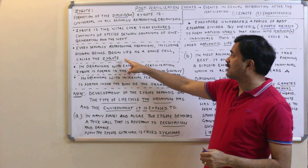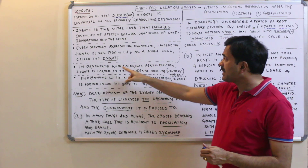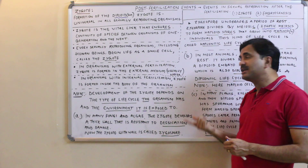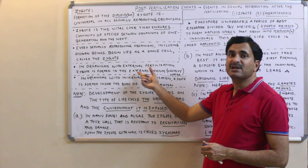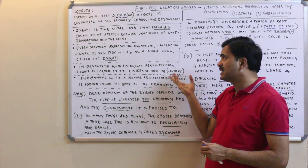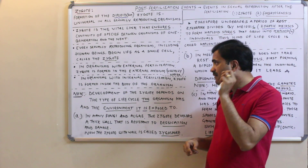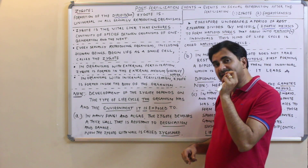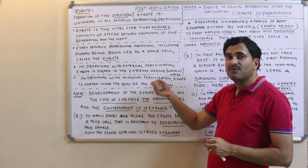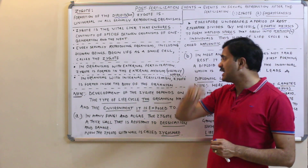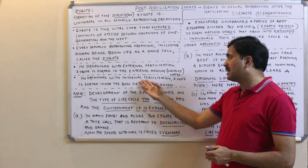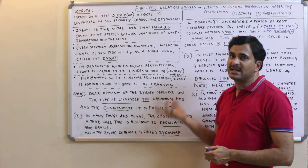In organisms with external fertilization, gametes fuse outside the body — usually in water — so the zygote is formed in the external medium, typically water. In organisms with internal fertilization, the zygote is formed inside the body of the organism. For example, in human beings, internal fertilization occurs and the zygote is formed inside the body.